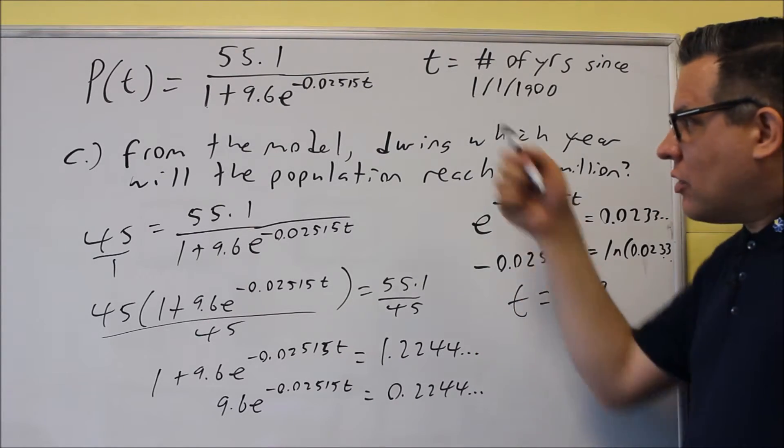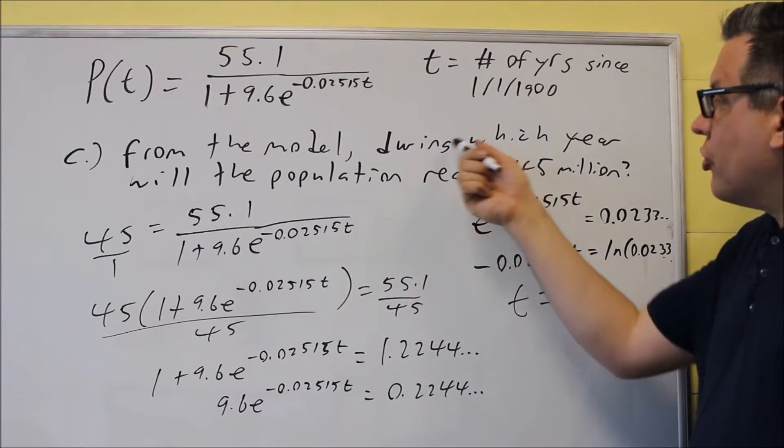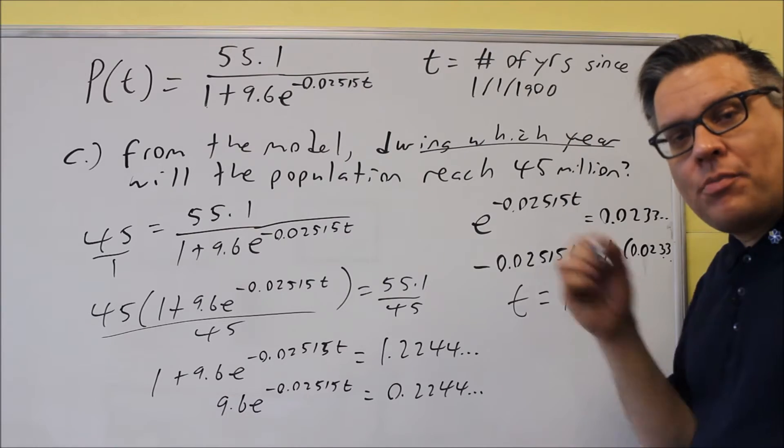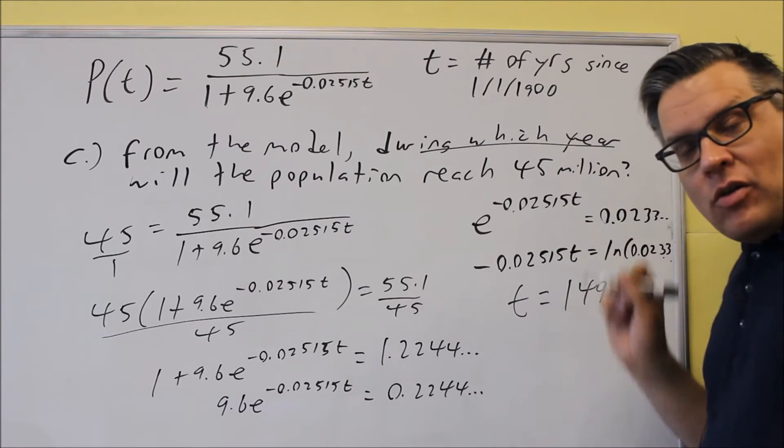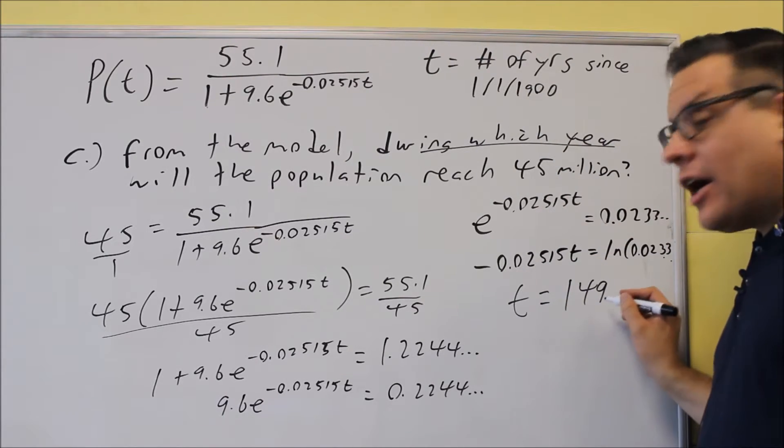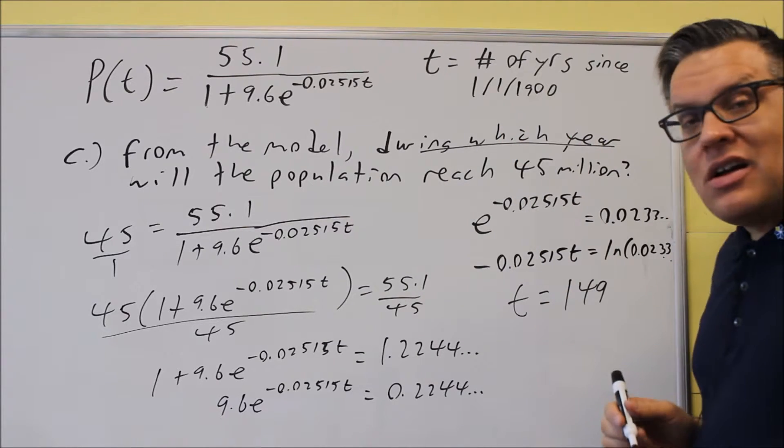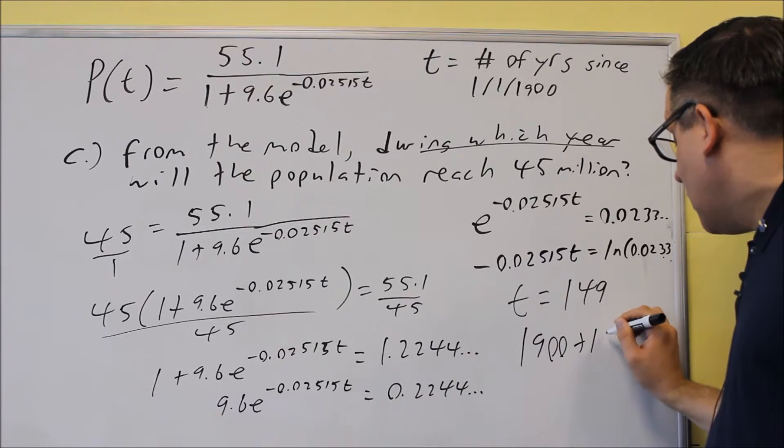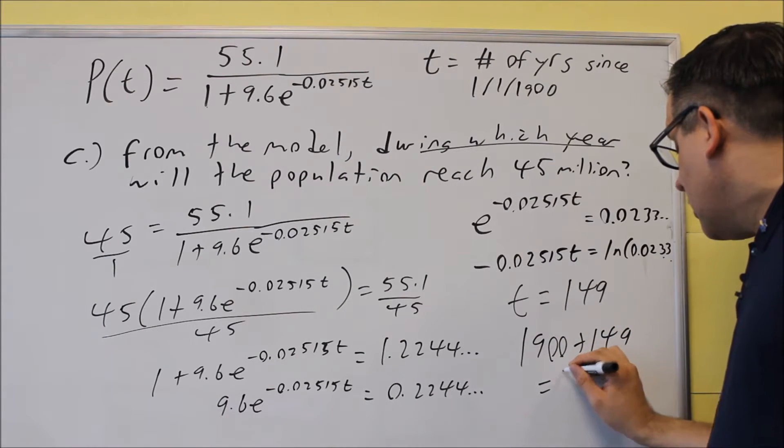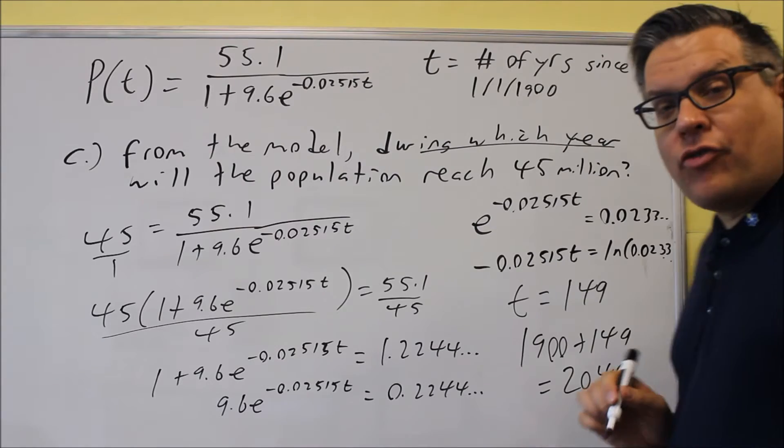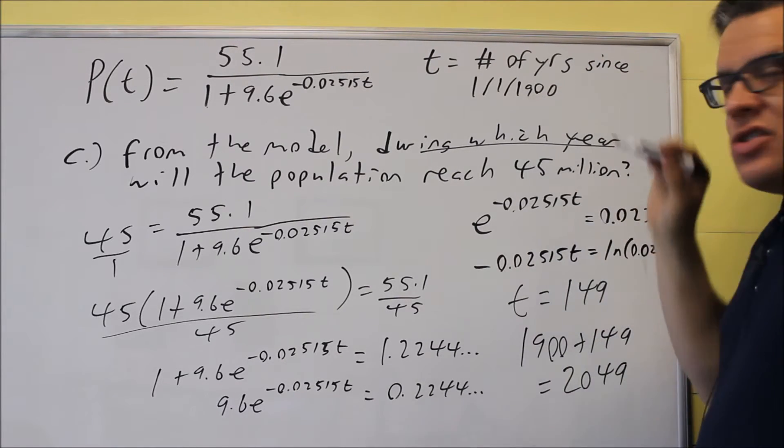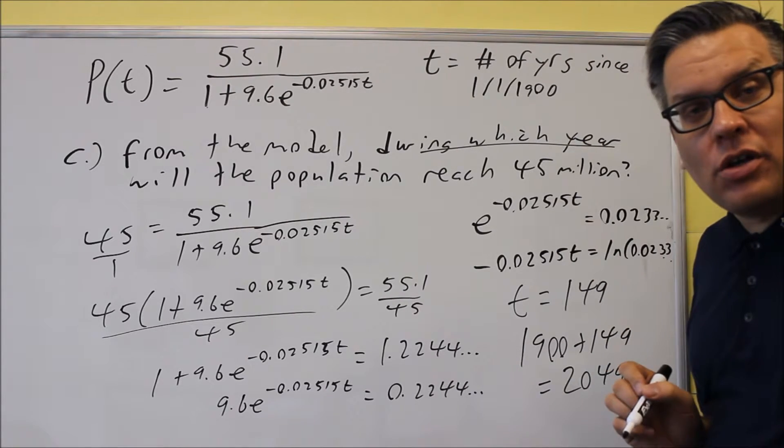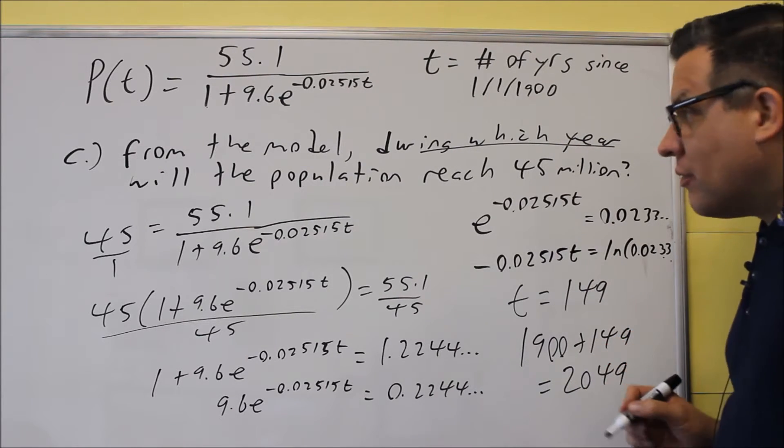So the question is, does this number answer the question? Well, let's see what it says. It says, during which year will the population reach 45 million? Well, this is not a year, 149. The 149 represents the number of years since 1900. So 1900, you're going to add 149 to it, and we get the year 2049. So remember, T is the number of years since 1900, and so you're adding 149 to that, and so 2049 would be your answer for part C.